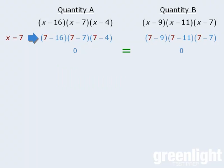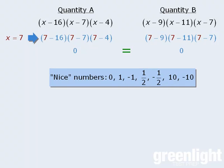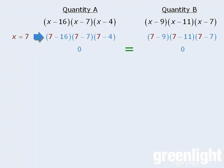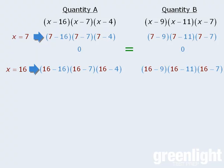At this point, we need to plug in another value. What would be a nice value to plug in here? Well, for this question, plugging in one of these numbers would take a lot of time. On the other hand, if we plug in 16, the two quantities are very easy to evaluate. In quantity A, notice that this binomial evaluates to be 0, and any product that includes 0 must evaluate to be 0.